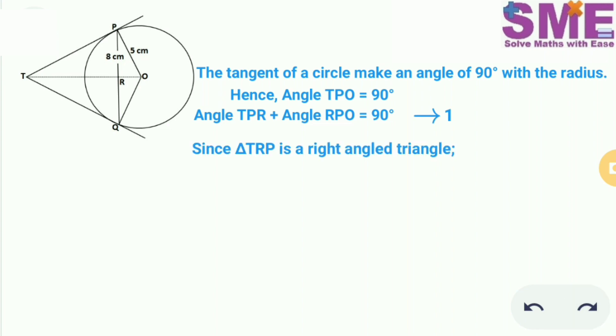Now since triangle TRP is a right angle triangle, so here angle TPR plus angle PTR is equal to 90 degrees. So this is the second equation we get. So from first and second equation we have angle RPO is equal to angle PTR.